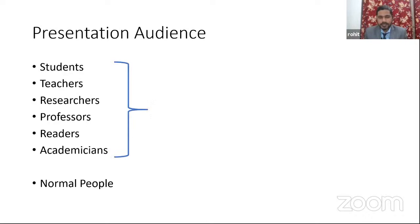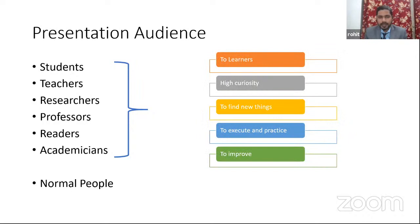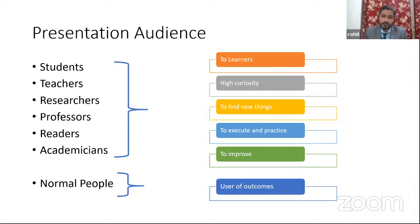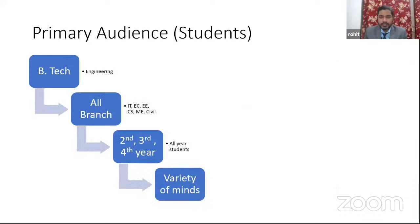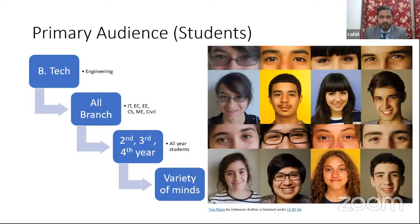What do they have in common? The first six categories mainly focus on learners who have a curiosity to find new things and to execute and practice them to improve the current scenario of technology, engineering, and science. Normal people are concerned with the outcomes — they are the users of what we produce as researchers, readers, and students. But this presentation is focused primarily on students, covering all different branches with more focus on the IT sector.